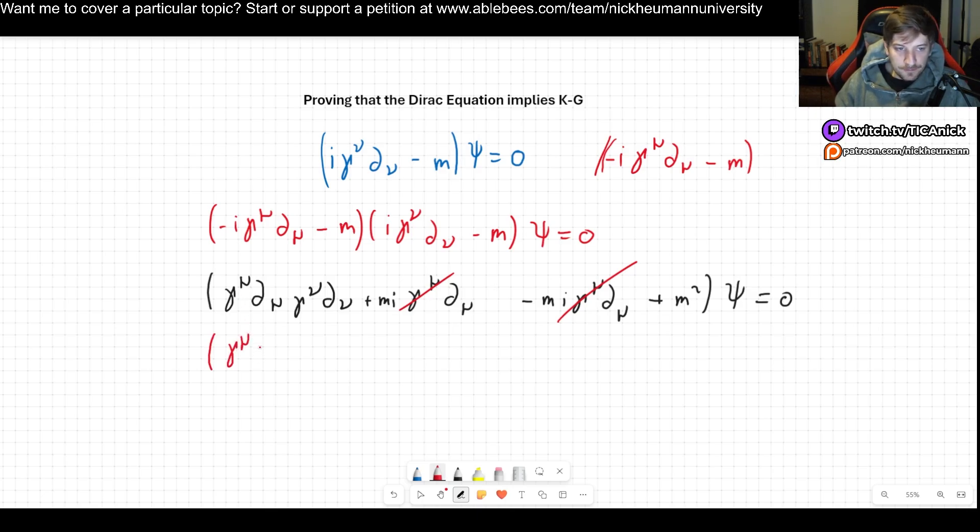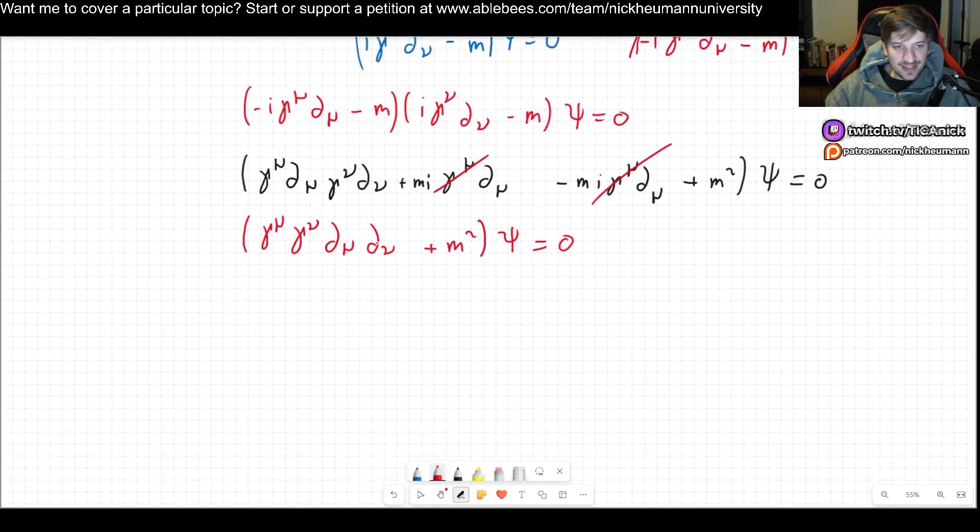So gamma mu gamma nu del mu del nu and then we have still plus m squared. We can kind of see that this is going towards Klein-Gordon but we still have these gammas and we need to get rid of them. There are no gammas in the Klein-Gordon equation.